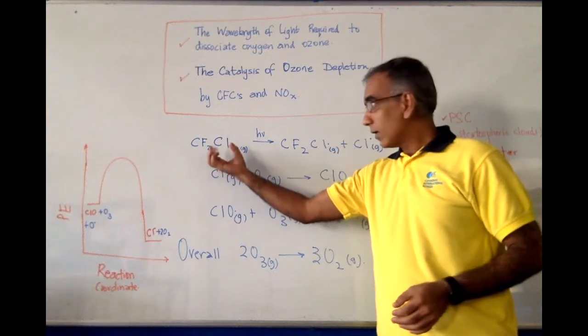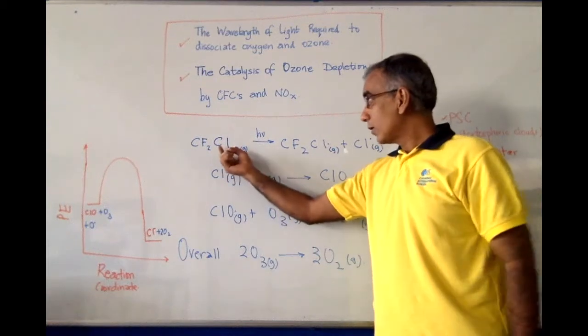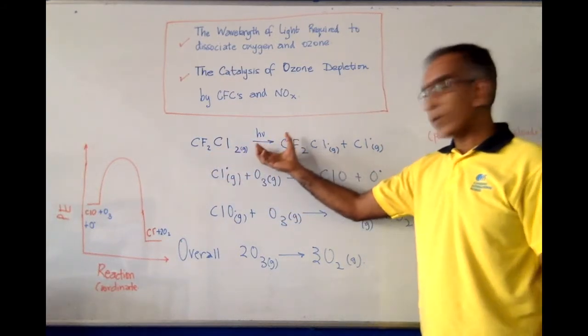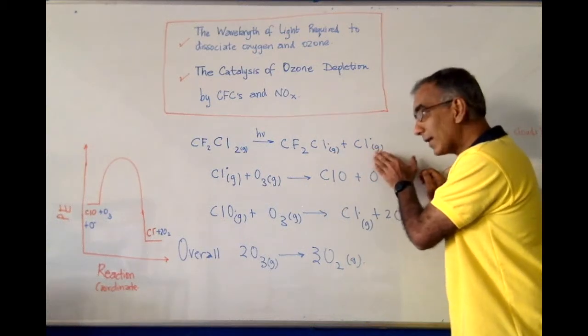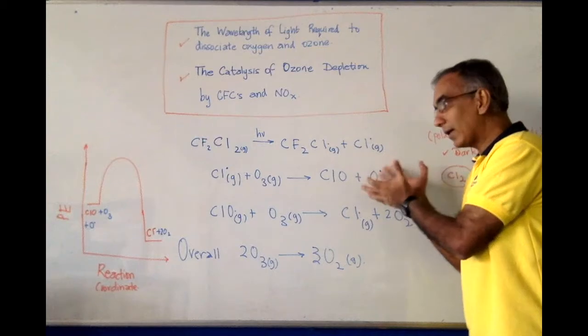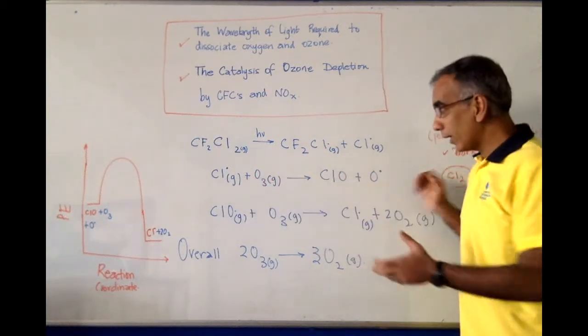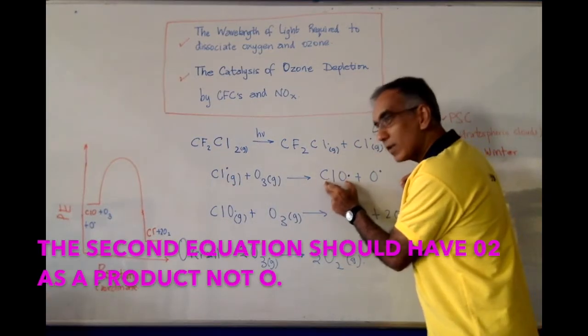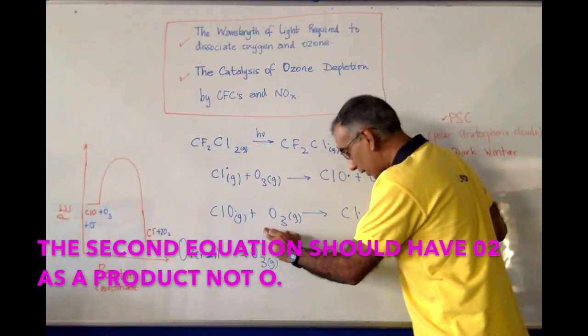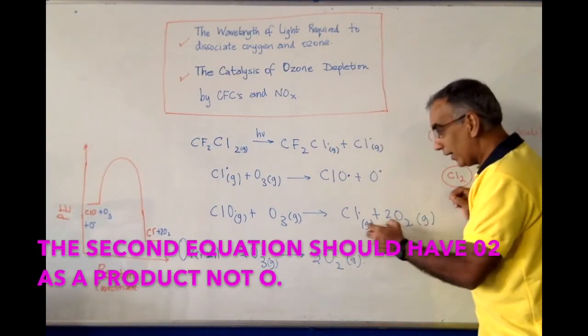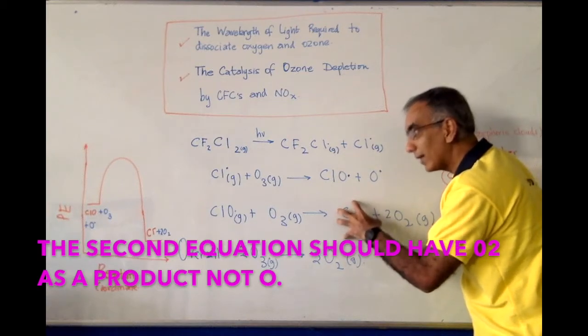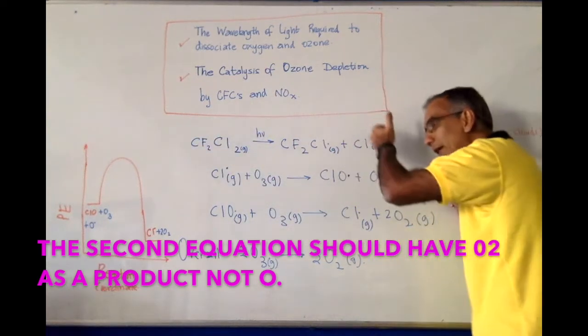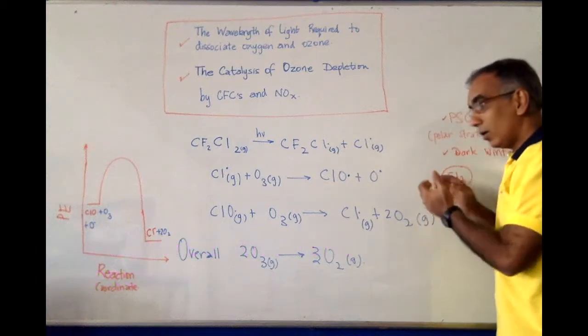Very often in textbooks, the process is kind of short circuited to show simple CFCs like Freon being acted upon by ultraviolet rays to liberate a chlorine-free radical. And it is this very reactive chlorine-free radical which then wreaks havoc upon the ozone layer by stripping O3 of an oxygen atom. This species, ClO, combines with O3 to generate O2 and to reproduce the chlorine-free radical, which is then able to work as a catalyst, going back and repeating the process of breaking down more and more ozone molecules.